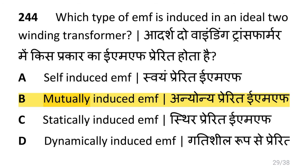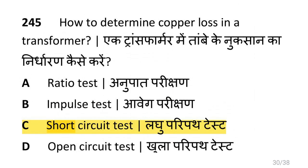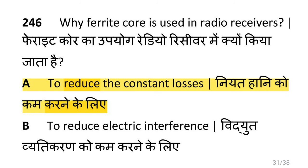Which type of EMF is induced in an ideal two-winding transformer? That is mutually induced EMF. How do you determine copper loss in a transformer? By doing a short circuit test. Why is a ferrite core used in radio receivers? To reduce the constant losses.